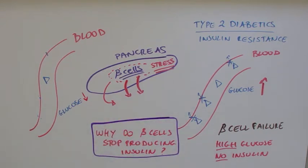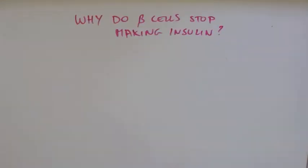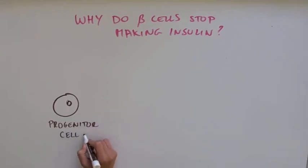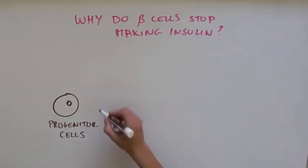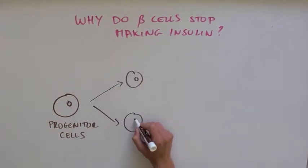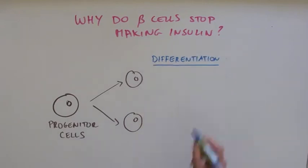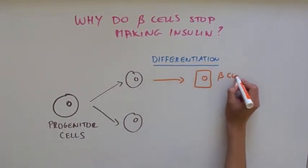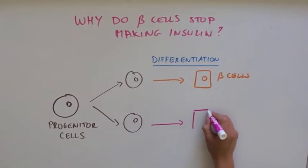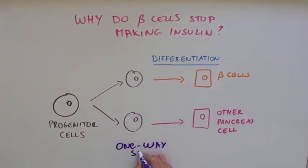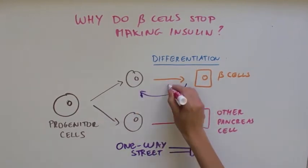To start talking about this finding, let's understand where beta cells come from. Beta cells come from stem cells that we call progenitor cells that are specialized in producing a variety of cells for the pancreas. What happens is a progenitor cell will divide, and those cells it produced will undergo a process called differentiation, where they become beta cells that produce insulin or other cell types in the pancreas. What's important to know is that this is a one-way street, so beta cells cannot make stem cells.